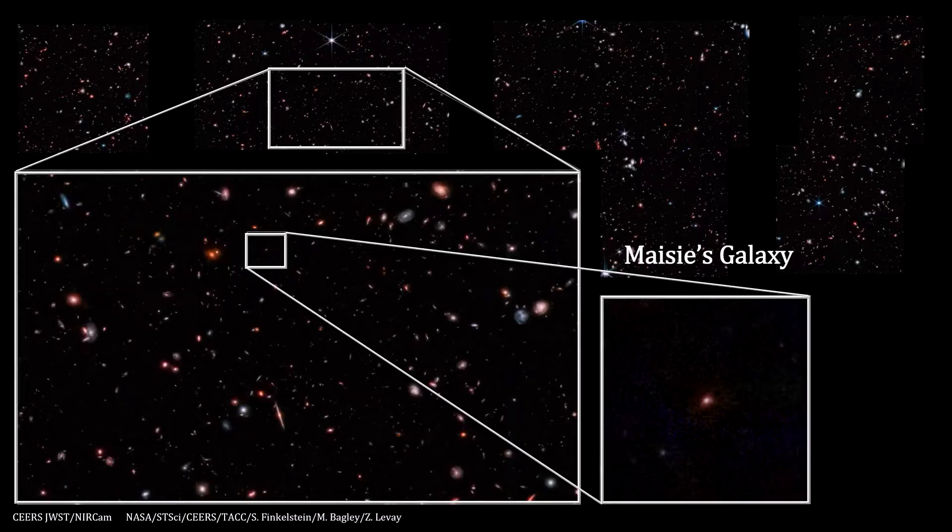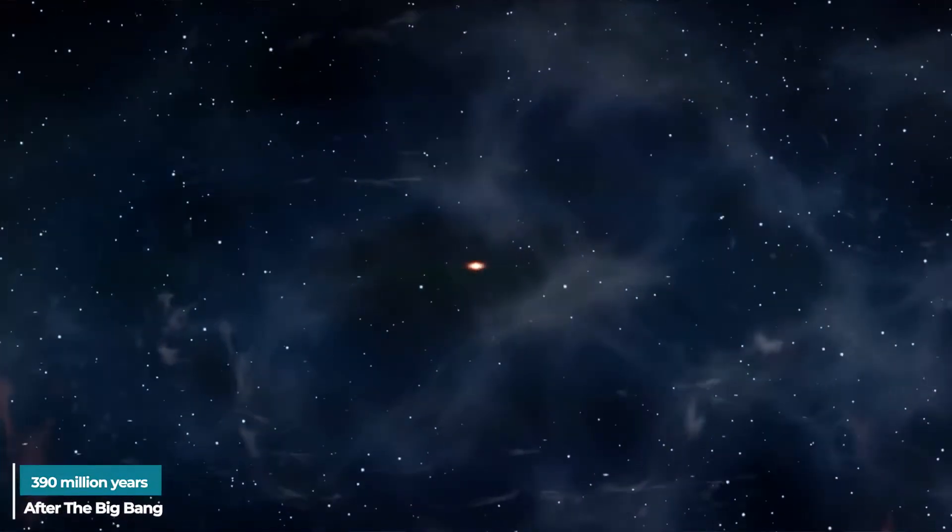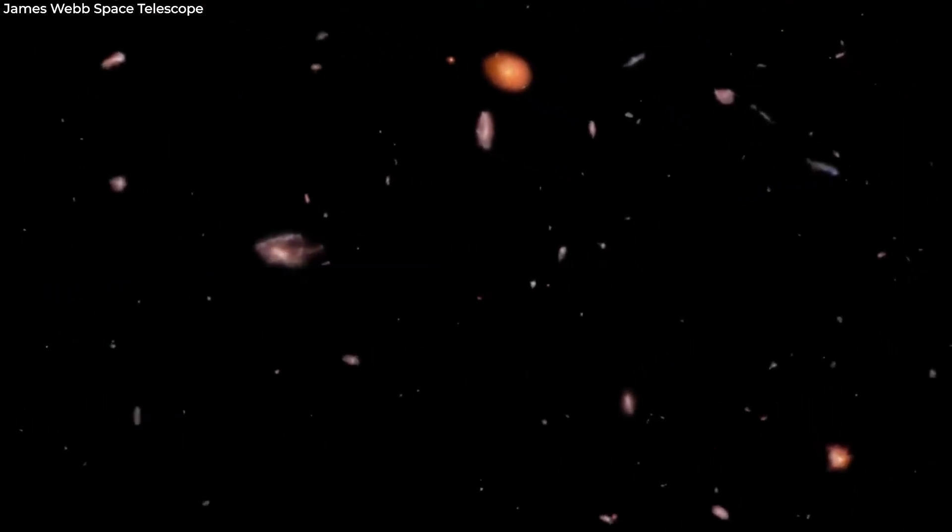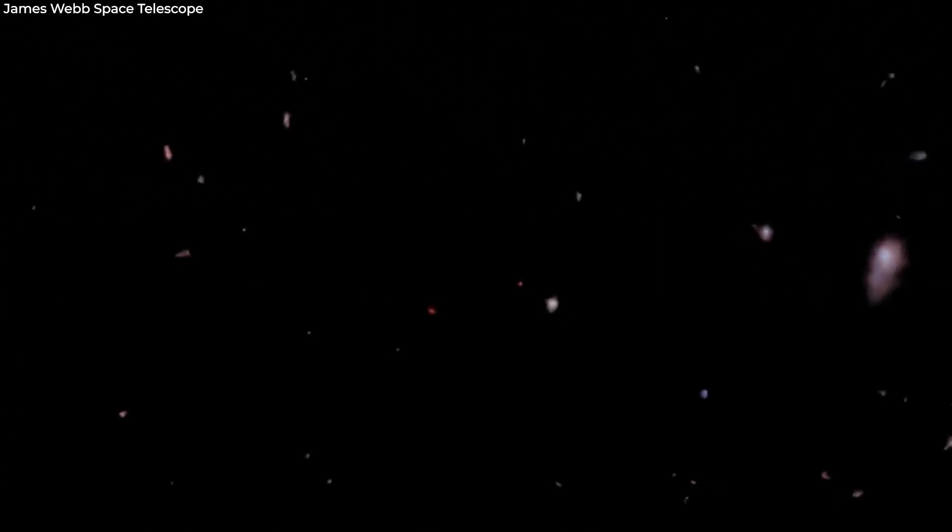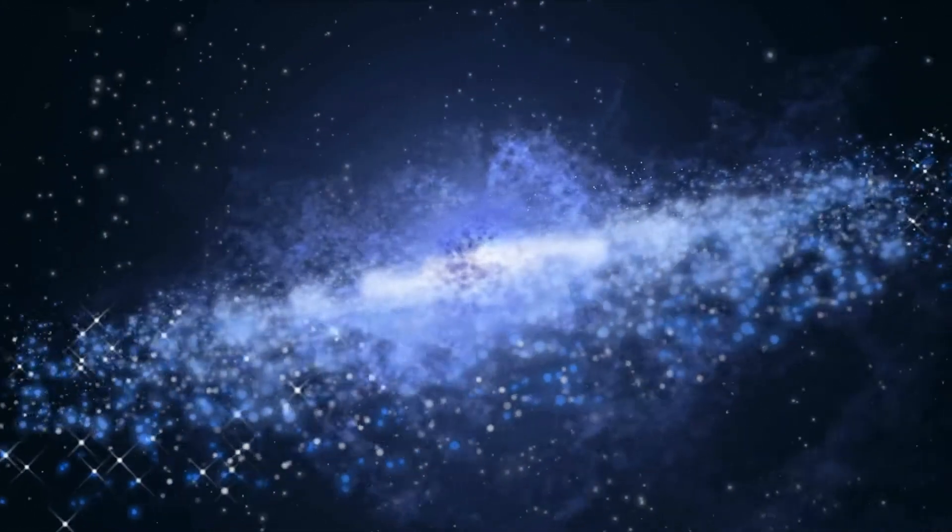Called Maisie's galaxy, it is said to have formed about 390 million years after the Big Bang, making it about 13.4 billion years old. Even though Maisie's galaxy seems in photographs to be just a bright orange blob of light, it demonstrates that appearances in space can be deceiving.